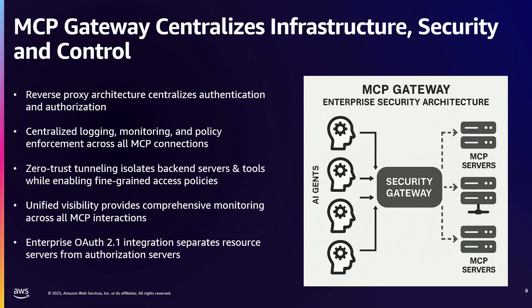Today we're going to talk about a way forward. Aaron is one of the builders here at AWS, so it's an honor to be here with him. He and many others have been working on MCP security architecture to help centralize infrastructure security and control. He's come up with something called MCP Gateway, and we're going to have him talk a little bit more about that.